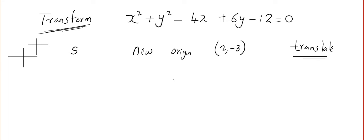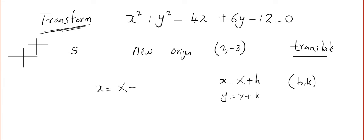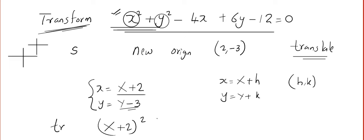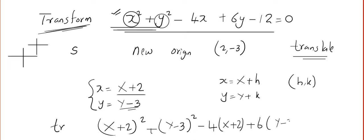To work out this problem, it is very, very easy. All you have to do is write small x = capital X + h, small y = capital Y + k, where h, k is the new origin. Here we get small x = capital X + 2 and small y = capital Y + (−3), so that gives y − 3. We have to transform this equation — we can write the transformed equation. The new equation is (x + 2)² — replacing small x with X + 2 and small y with Y − 3 — plus (y − 3)² minus 4(x + 2) plus 6(y − 3) minus 12 = 0.